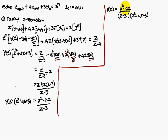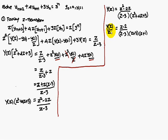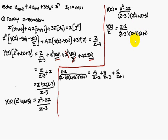Therefore Y(Z) equals (Z² minus 2Z) by [(Z minus 3)(Z² plus 4Z plus 3)]. Now solve using partial fractions: write Y(Z)/Z equals (Z minus 2) by [(Z minus 3)(Z plus 3)(Z plus 1)]. The denominator Z² plus 4Z plus 3 factors as (Z plus 3)(Z plus 1), since multiplication gives 3 and addition gives 4. Write this as A/(Z minus 3) plus B/(Z plus 3) plus C/(Z plus 1).